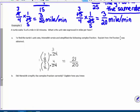A turtle walks 7/8 of a mile in 50 minutes. What is the unit rate expressed in miles per hour? This is minutes, and this says miles per hour. To find the turtle's unit rate, Meredith wrote and simplified the following complex fraction. So, the numerator is the fraction 7/8, and the denominator is the fraction 5/6, because to find speed, we take distance and divide it by time. 7/8 divided by 50 minutes.